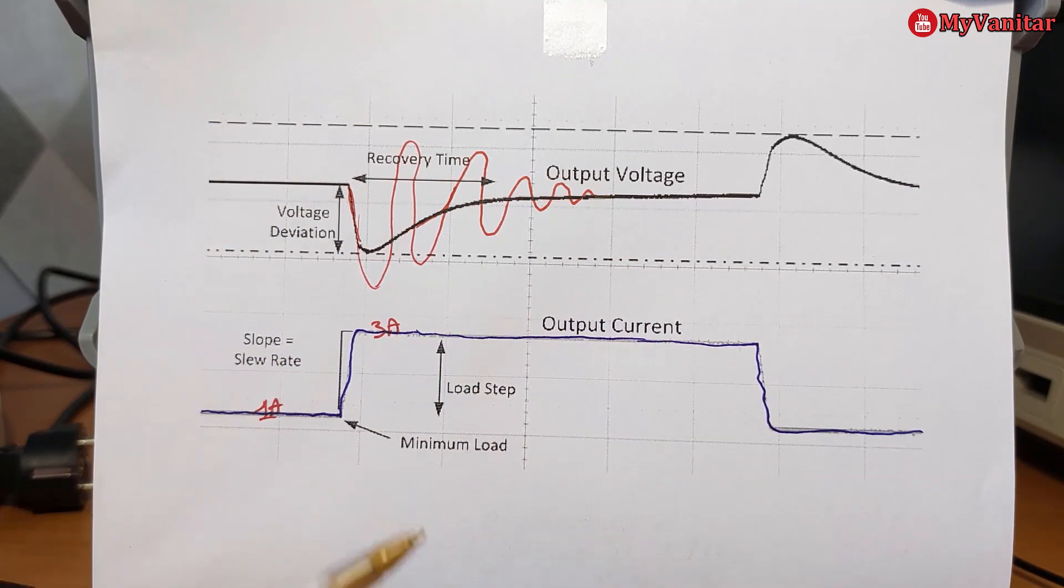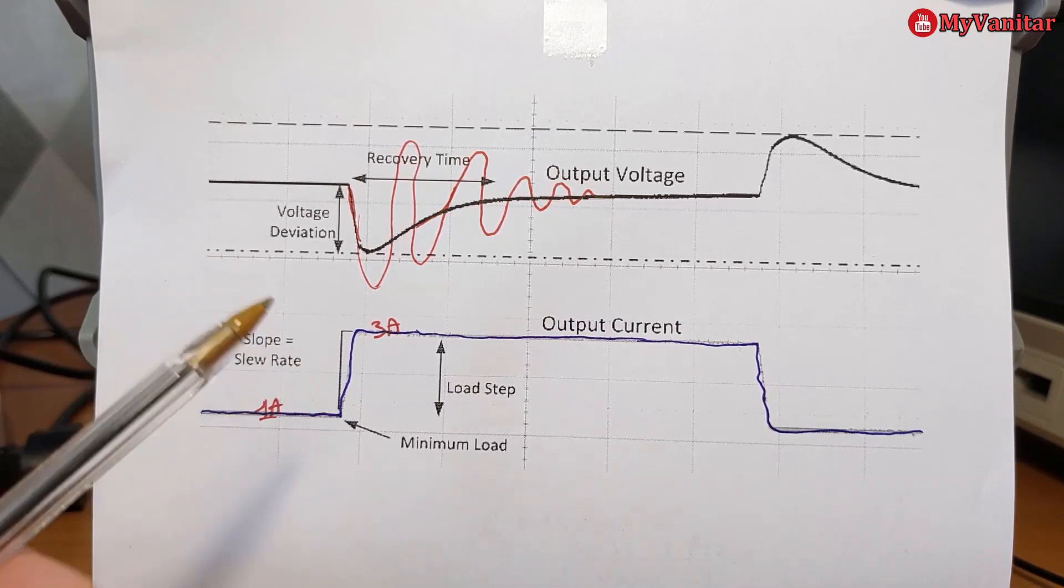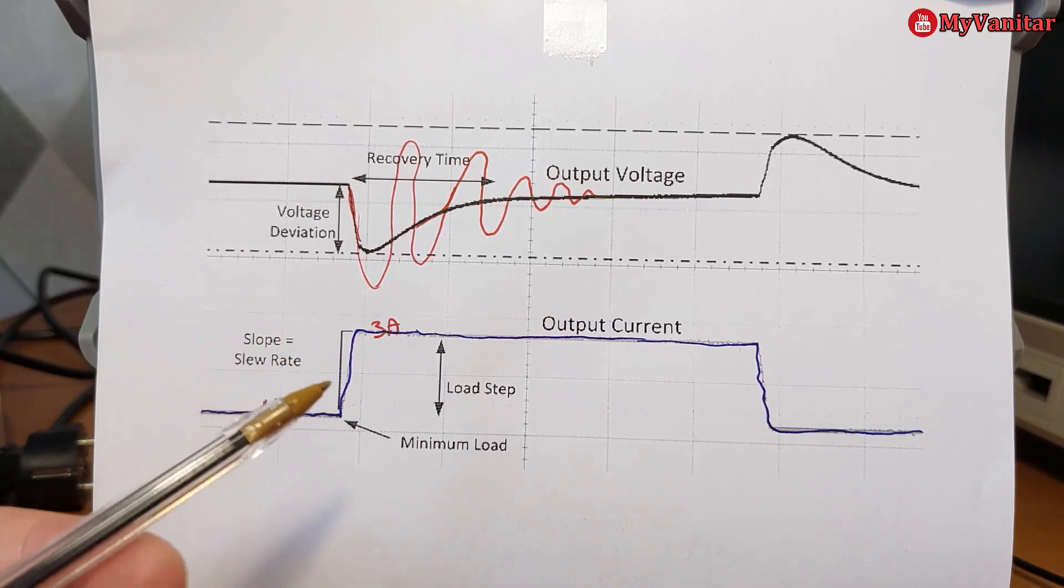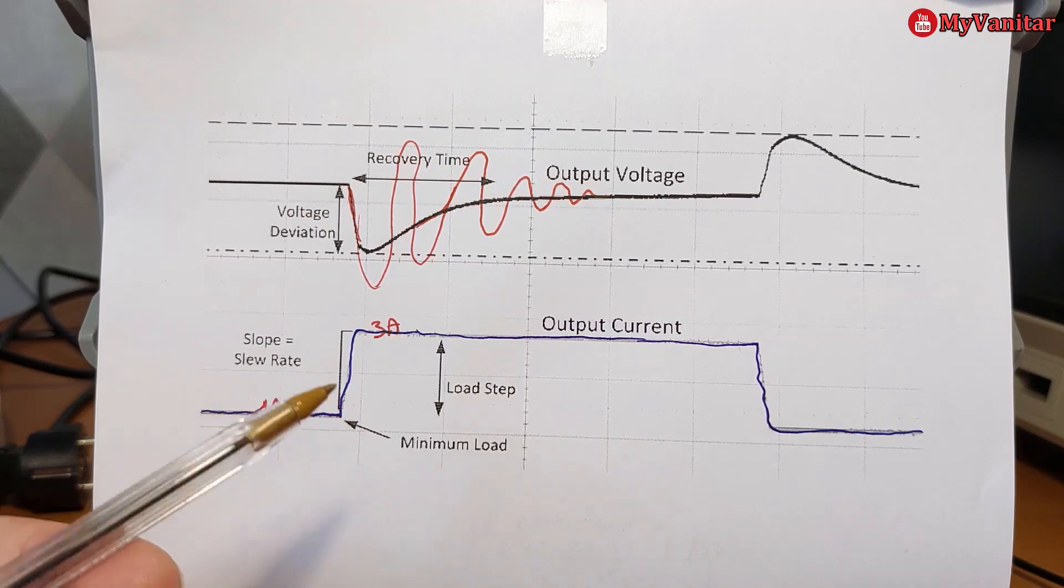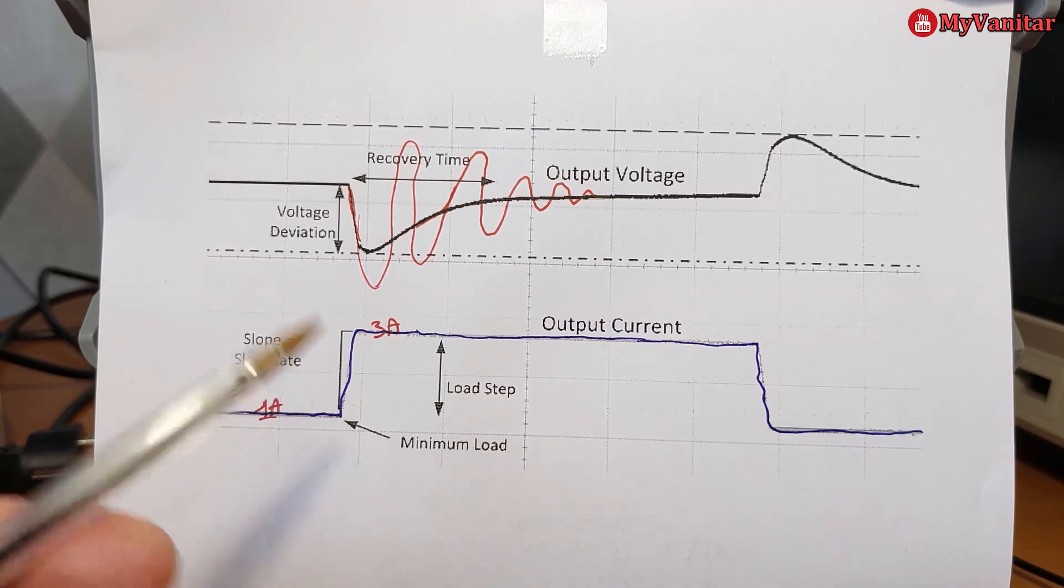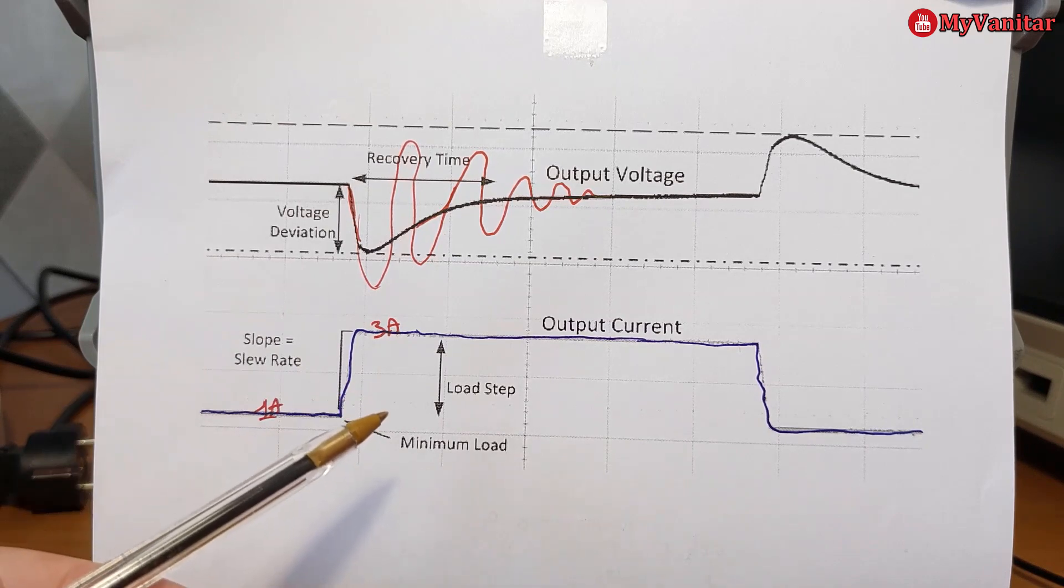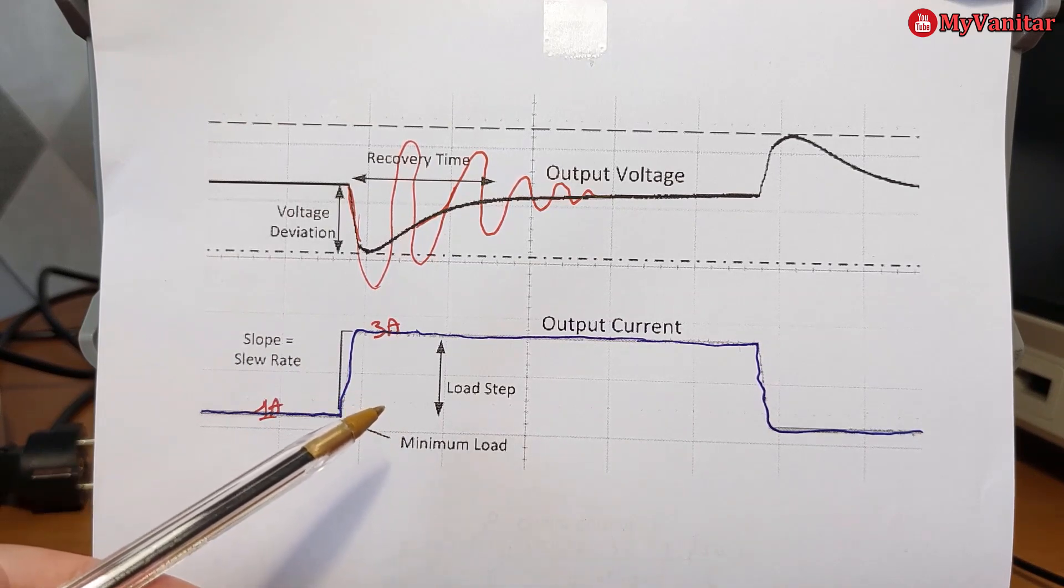This is especially important in applications where the load current changes continuously. For example, if you want to design a power supply or converter to be used in a vehicle or car, consider a headlight.